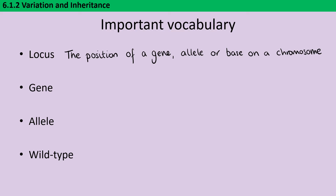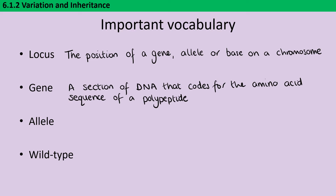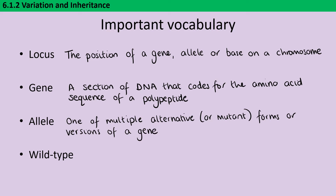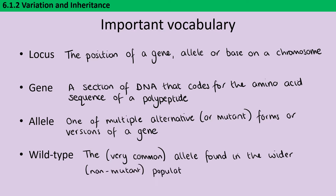You should already know from your GCSEs that a gene is a length of DNA that gives you the code for a particular set of amino acids, which form a polypeptide that will eventually become a protein. Often there are multiple different variants of that gene — we call these alleles. An allele is one of multiple alternative or mutant forms of a gene. When we refer to something as the wild type allele, that means it's the allele found in the vast majority of the population — the normal allele we would expect to see.